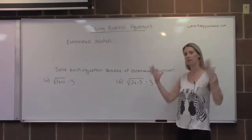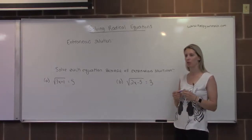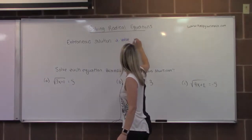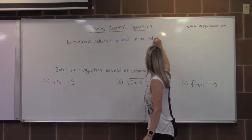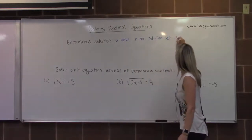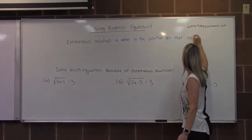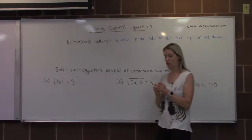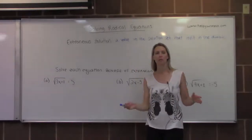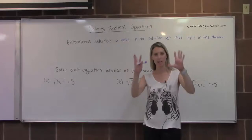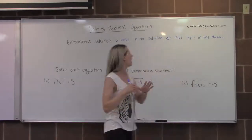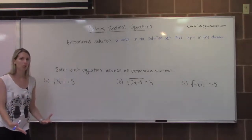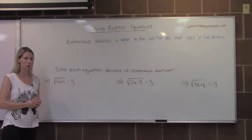Extraneous solutions will typically only arise when we are dealing with solving radical equations, though there are a few other instances. An extraneous solution is a value in the solution set that isn't actually in the domain. If you come across an extraneous solution, it is not a solution — you throw it out. So if you have x equals 2 and x equals 3, but 2 is extraneous, then the final answer is x equals 3.